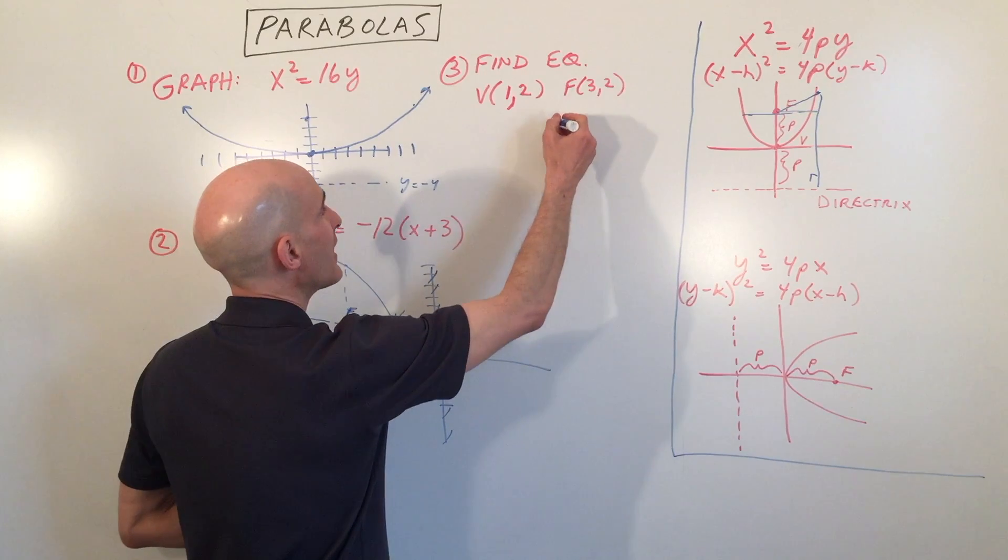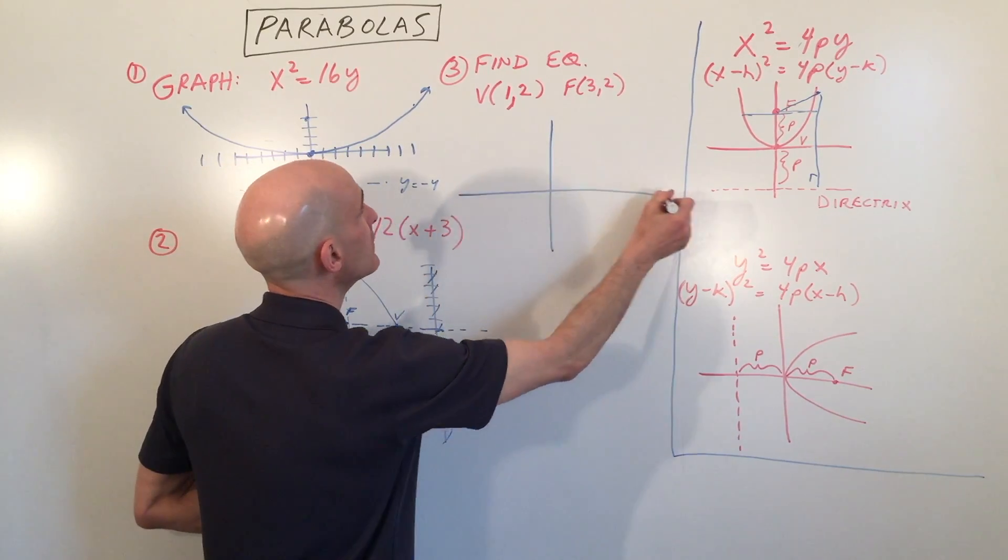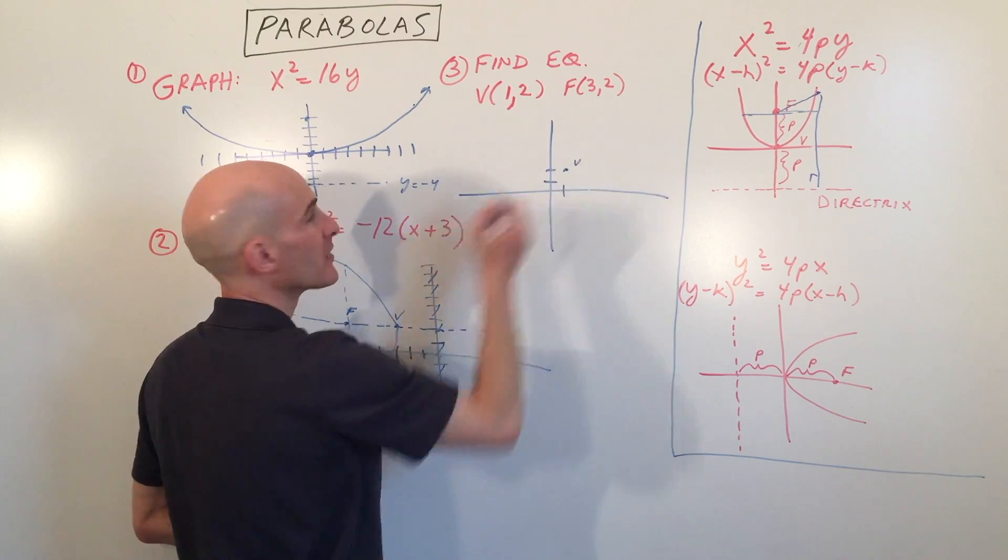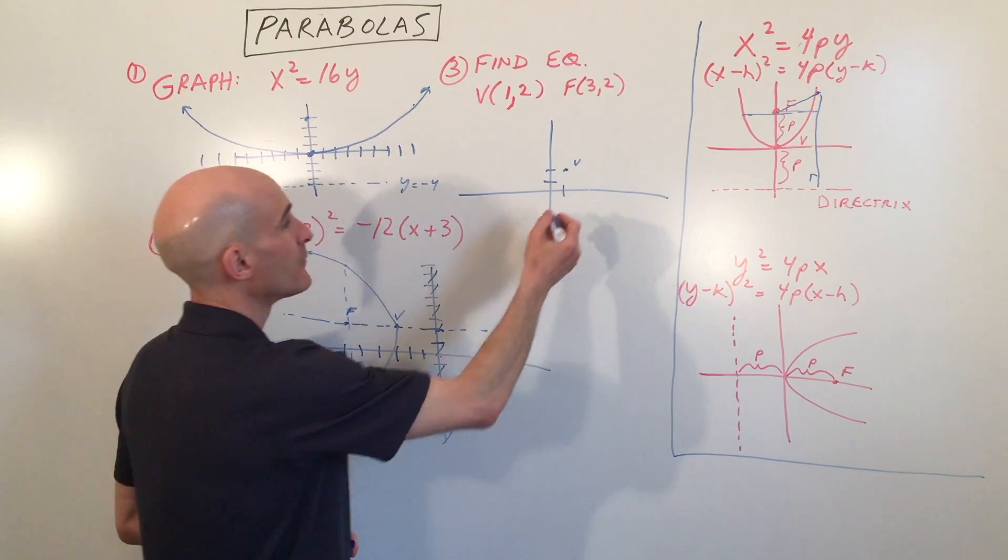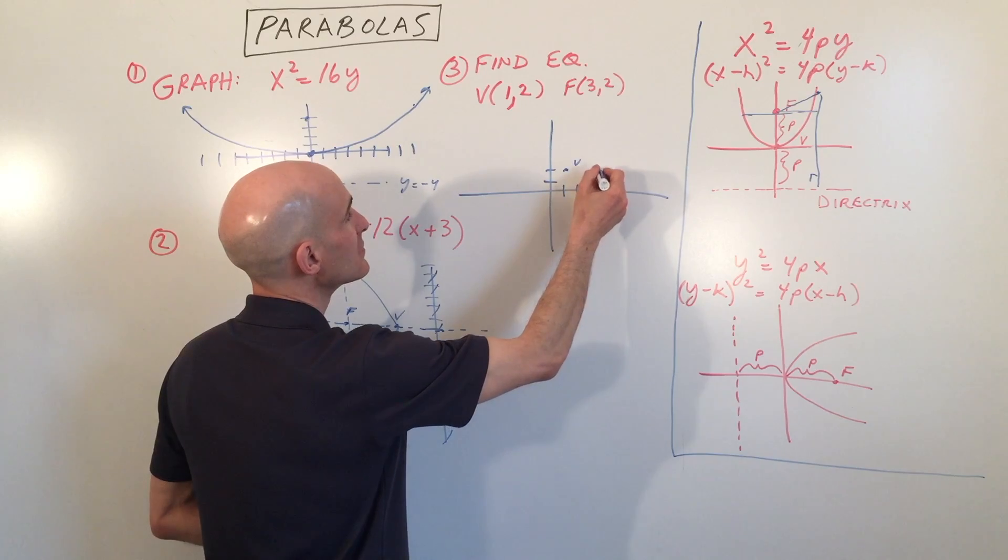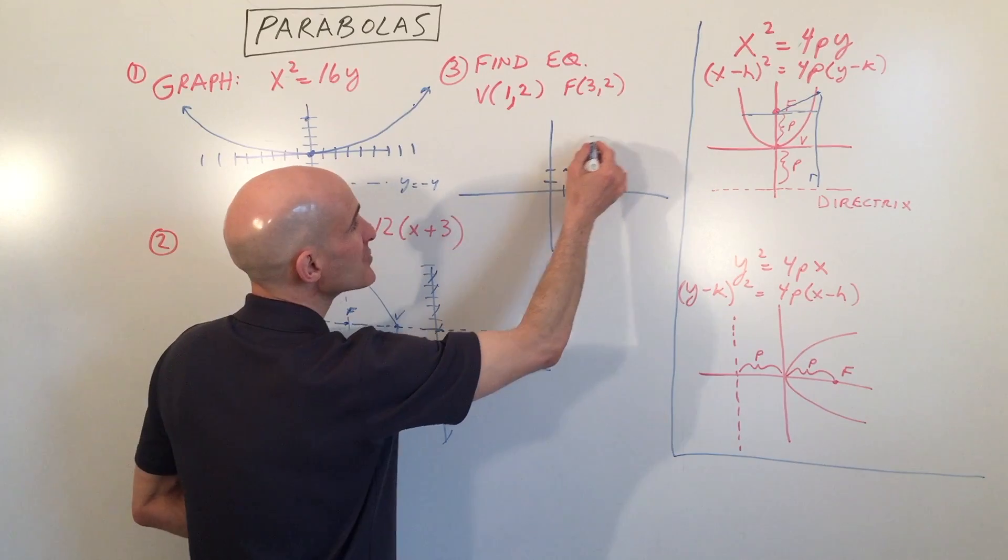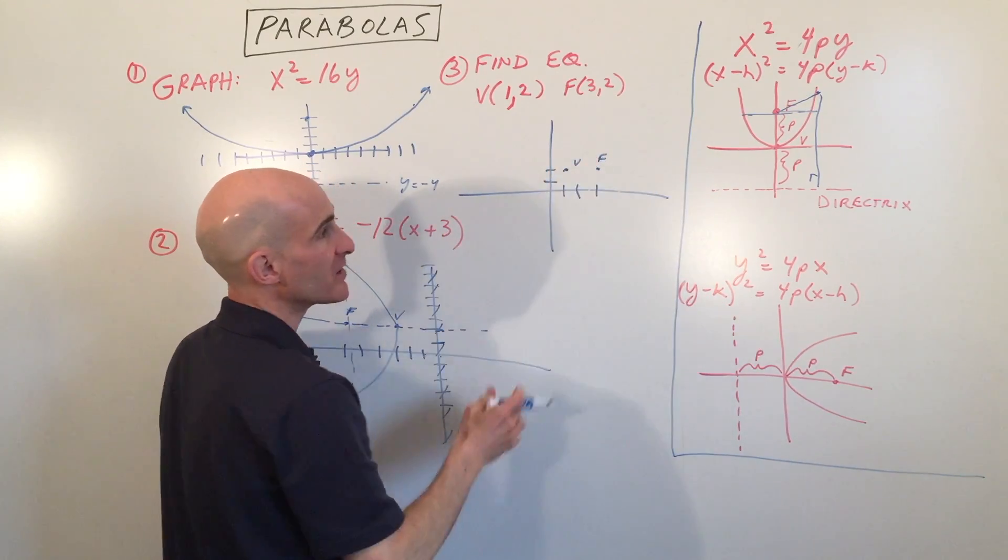So basically right here we have vertex at (1, 2). I'll just write a letter V for vertex. The focus is at (3, 2). So I'm just going to put a little F for focus.